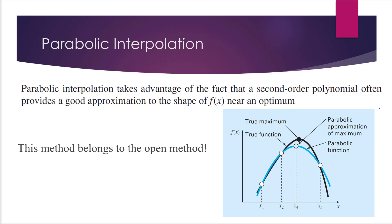Remember that the optimum points correspond to the points where the curve looks flat. So in this method, we use a second-order polynomial as an approximation of the true curve. As shown in this figure, the black curve represents the true function, and this black dot is the true maximum. We first find three points on the true curve, and then based on those three points, we draw a second-order polynomial as an approximation — this blue curve represents the parabolic function. We then find the optimum point of this parabolic function, and use that point as an approximation of the true maximum.